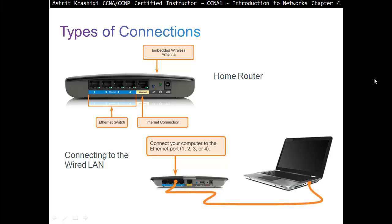Types of connections. Imagine that we have a home router. At the back of the home router there are four ports — that's your switching, so your router is actually performing the switching. Then we have a port where we connect the internet connection. In the UK, this port is a bit smaller because it's RJ11, while the other ports are RJ45. This router also has an embedded wireless antenna, so it combines copper as well as wireless.